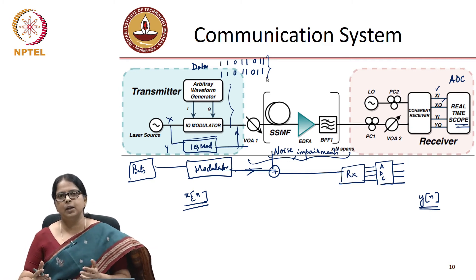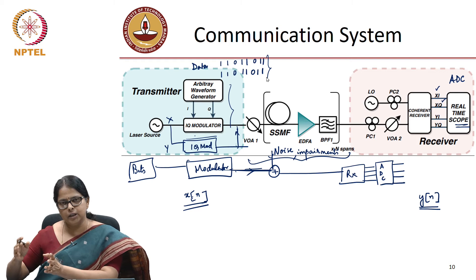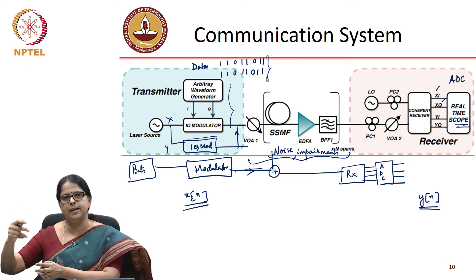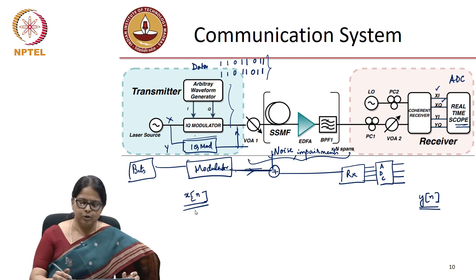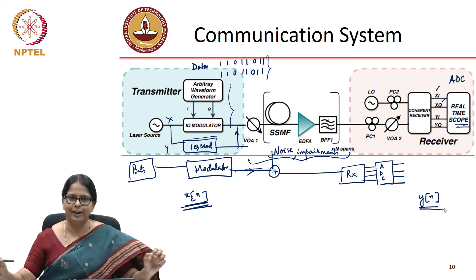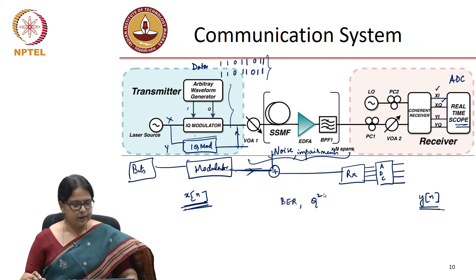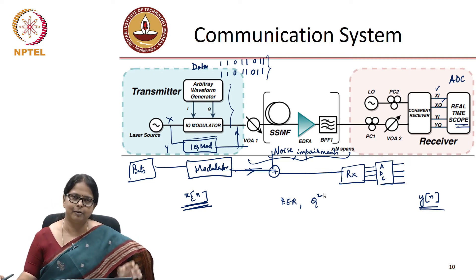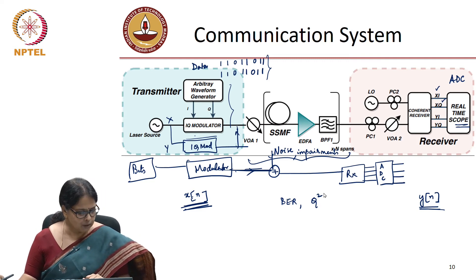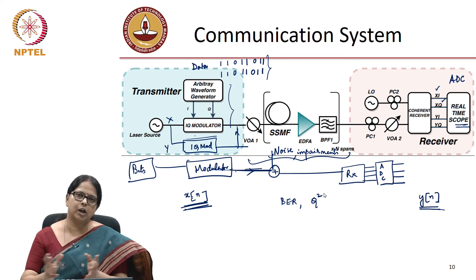These bit sequences get mapped into symbols, mapped into different polarizations, and transmitted through the channel. The 4-channel ADC output gives all the sequences corresponding to the in-phase and quadrature components of the two polarizations, and finally they are sequenced back into the bit stream. At the end of the day, you have a bit stream that you need to transmit and a bit stream that you have received. You quantify the performance of the link through the bit error rate and Q-squared. The bit error rate is simply the ratio of the number of bits in error to the total number of bits transmitted. The question is: before you do this bit error rate calculation, can you do some signal processing to compensate for the impairments caused by the system?